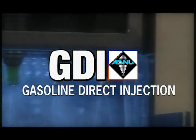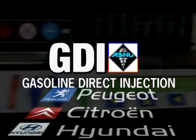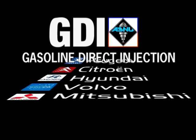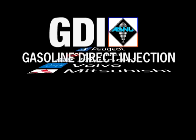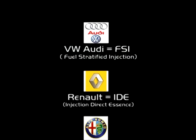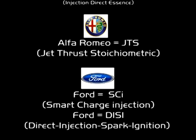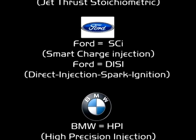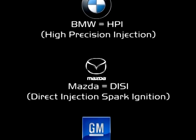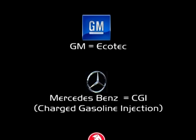Gasoline direct injection, or GDI as it's commonly known, is the next generation of fuel injection now being used on most new executive type production vehicles. Some manufacturers use different names for their version of a direct injection system. GDI is a direction in which all vehicle manufacturers will have to go, as GDI gives outstanding performance and fuel economy while maintaining the minimum of exhaust pollution.